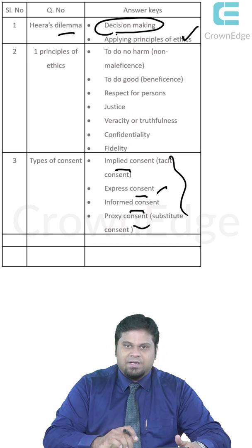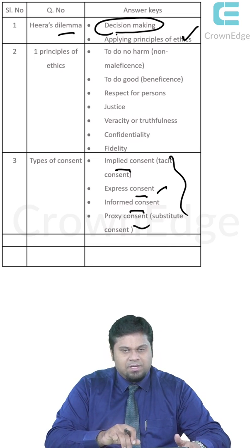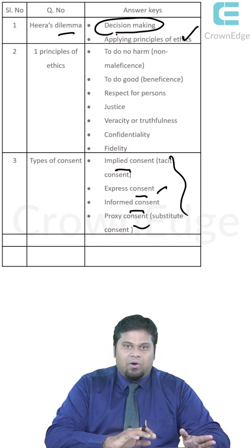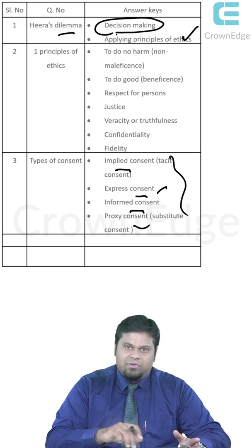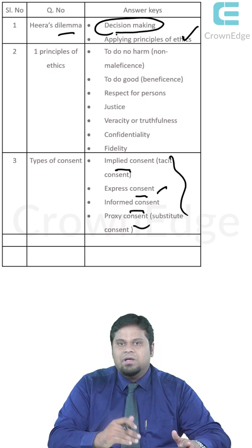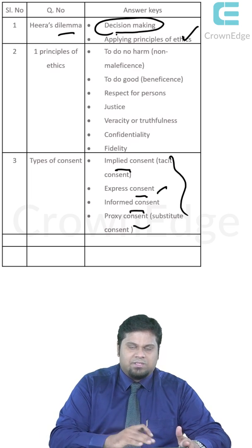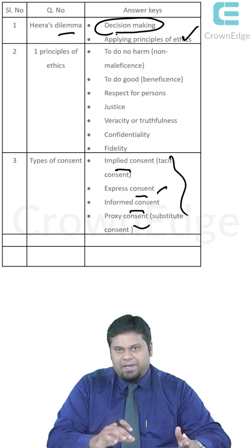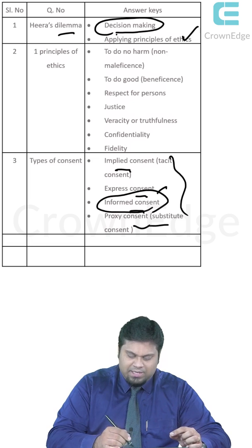Informed consent is the most important type — a combination that was brought in by the Nuremberg code, where all repercussions related to the treatment are covered: the pros, cons, benefits, risks, the procedure, how it will be carried forward, and why it is being done. All of that is packaged in a document called informed consent.